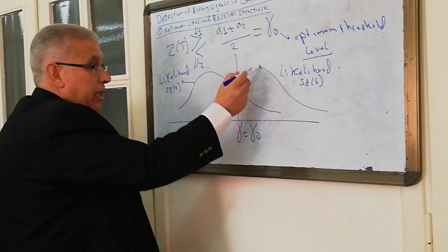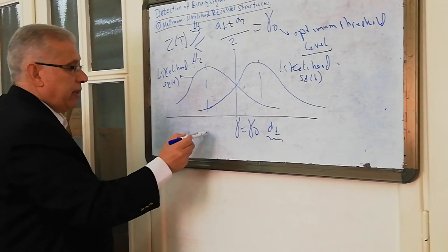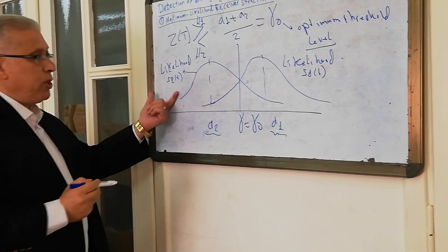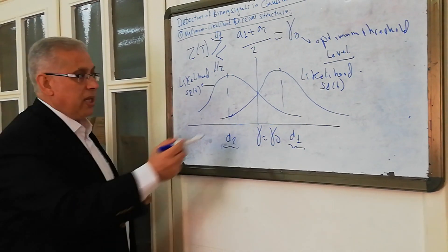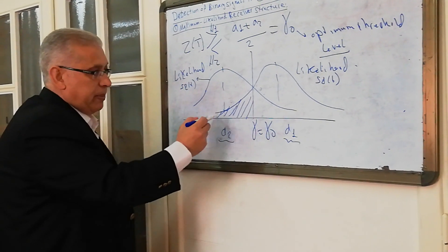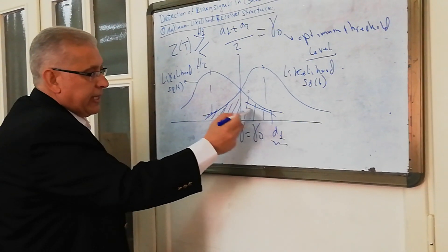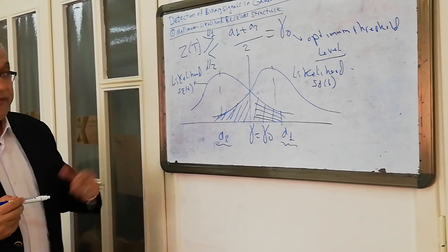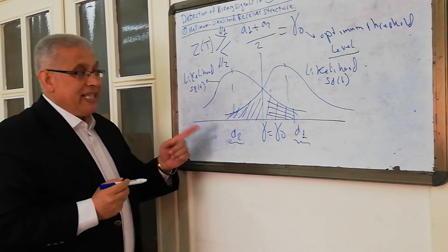Here will be A1, the signal component of S1, and here will be the signal component A2 of S2. Here is S2, here is S1. We will have two types of errors. The first type: if S1 has been transmitted and the channel noise affects the output so that Z(T) will be less than the threshold.